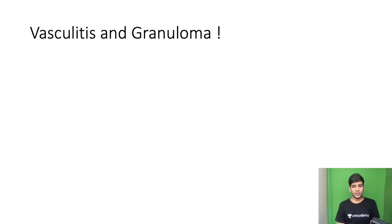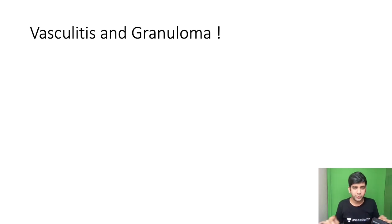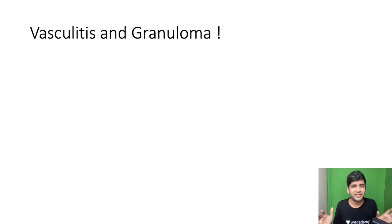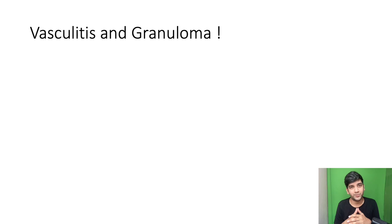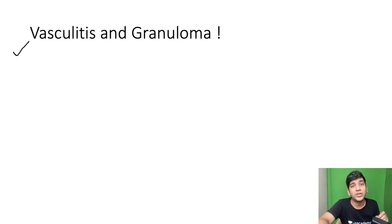Now, vasculitis and granuloma: when I have a history of vasculitis and microscopy shows granuloma, actually almost every vasculitis will have granulomas — giant cell, Takayasu, Kawasaki (biopsy unlikely), Wegener's, Churg-Strauss, yes. Many vasculitides can have granulomas. So this brings me to the point: what are the vasculitides without granuloma? When there are no granulomas, what am I going to think of?